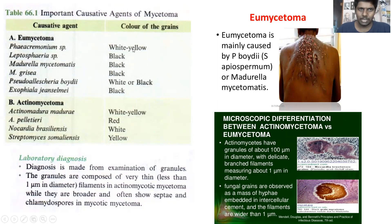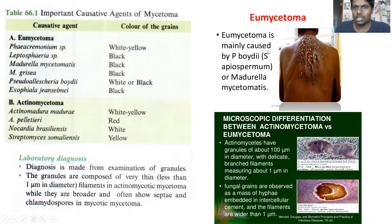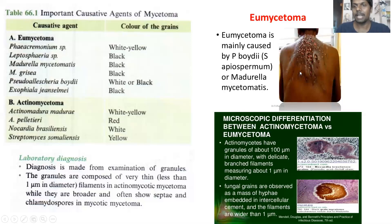Depending upon the type of granules, we can pinpoint the type of fungus that infected the person. In Eumycetoma, it is generally localized in the back side, whereas in Actinomycetoma, it is usually confined to the foot.